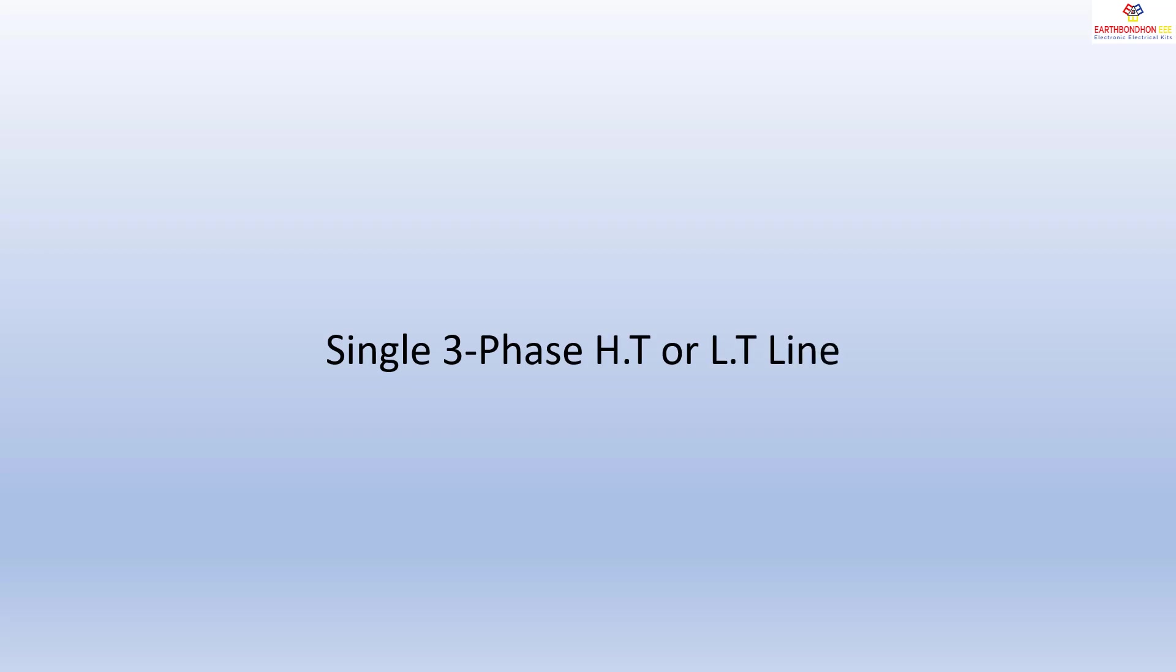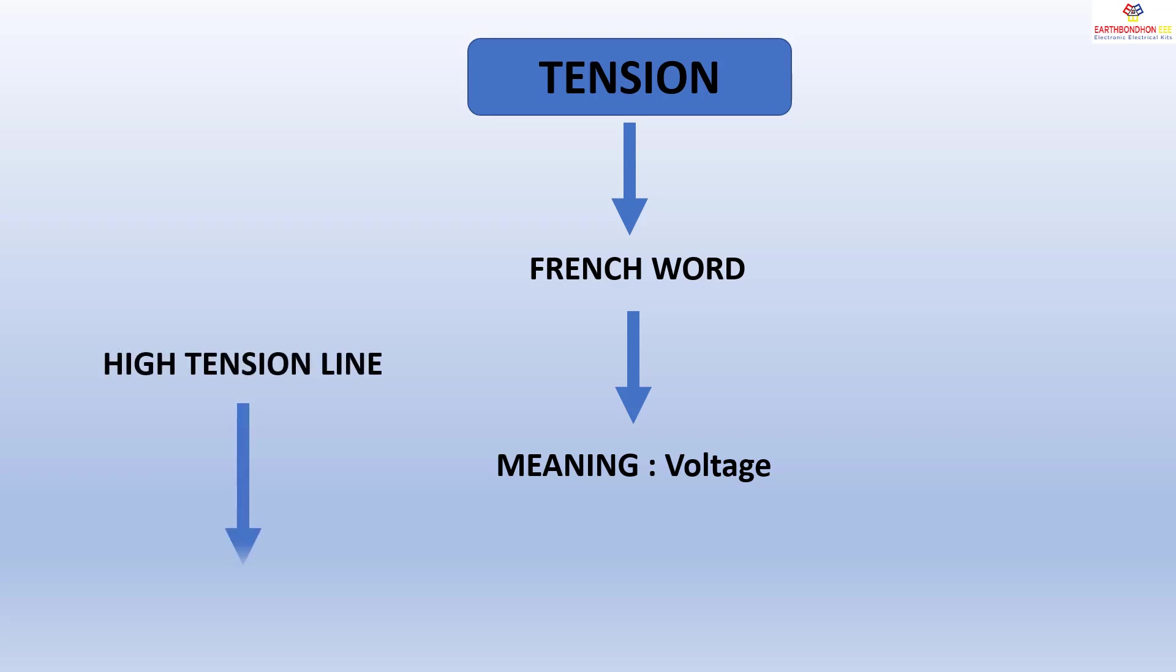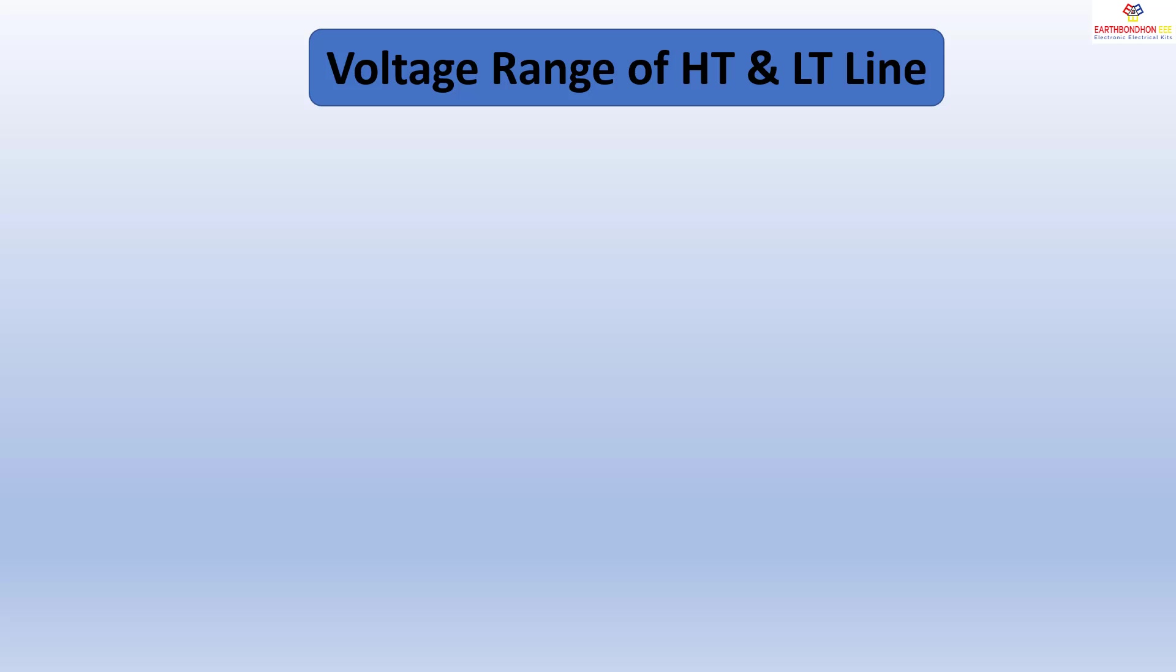Single three-phase HT or LT line connection. Full form: HT line is High Tension, LT line is Low Tension. Tension is a French word meaning voltage. High tension line means high voltage line, and low tension line means low voltage line.